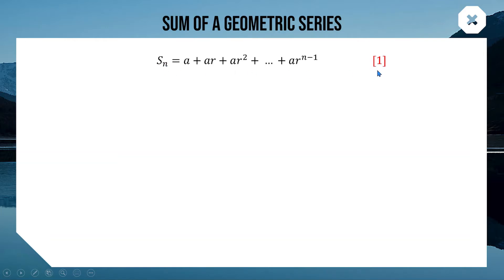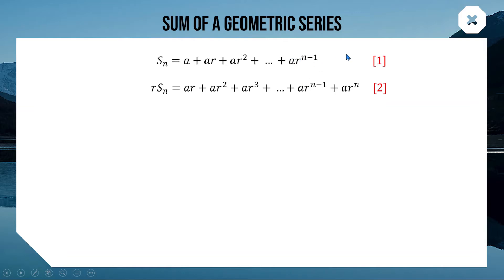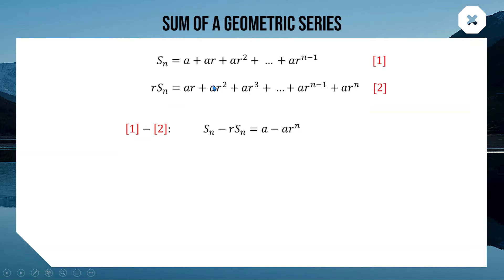Here is an expression for the sum of the first n terms of a geometric series — call it equation 1. To form a quick formula, we multiply every term by r: a becomes ar, ar becomes ar², and so on, until the last term is ar^n. Now the top and bottom lines have a lot in common — ar, ar², everything except the first term a and the last term ar^n. Doing equation 1 minus equation 2 cancels all the middle terms, leaving Sn - rSn = a - ar^n.